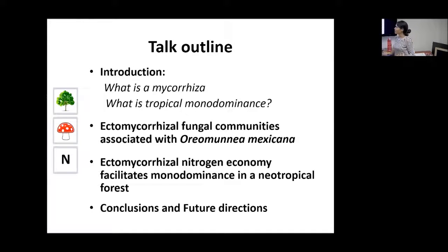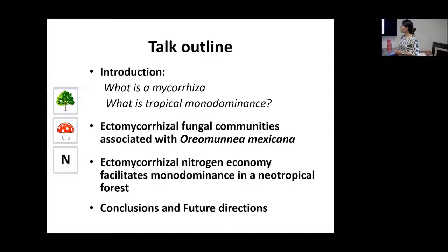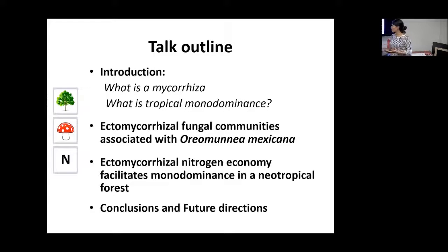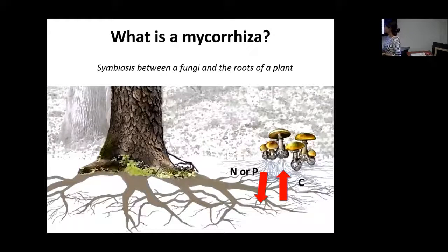We're going to have a brief introduction about what mycorrhizal is and what tropical monodominants are, then we're going to talk about what is the ectomycorrhizal fungal community associated to monodominants, how these ectomycorrhizal associations can modify the nitrogen cycle to facilitate monodominants, and then some conclusions.